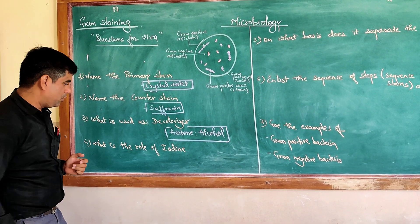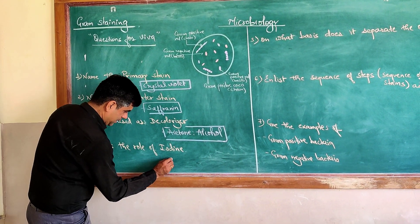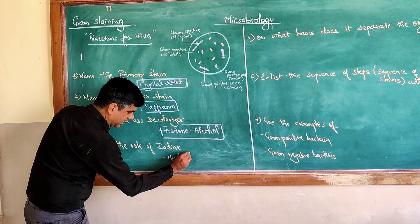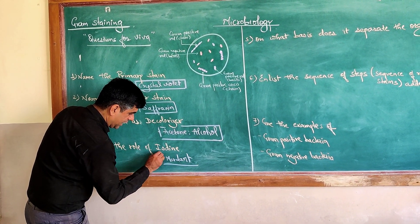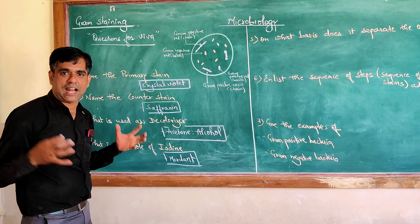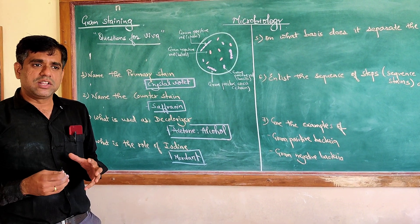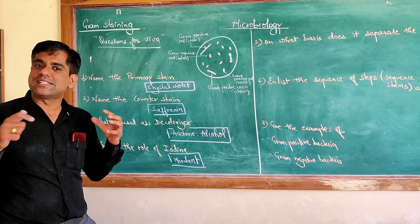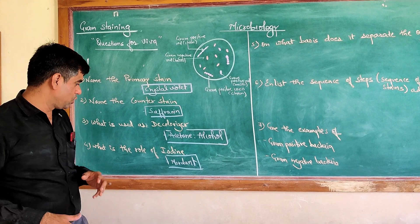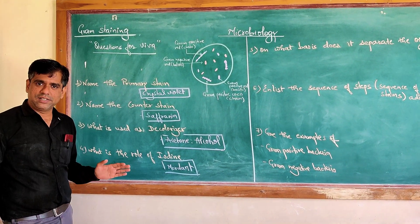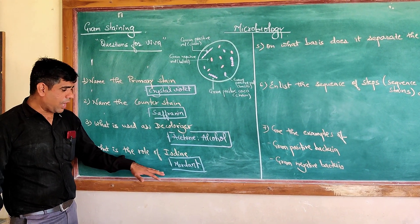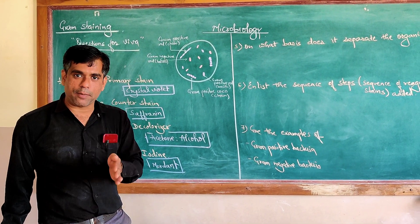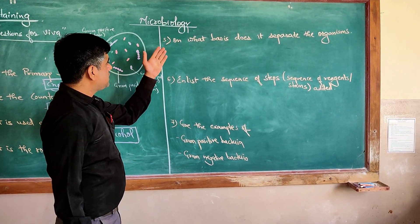The next question: what is the role of iodine? Iodine is represented as a mordant. More specifically, it acts as a trapping agent — the one which traps the crystal violet-iodine complex inside the cells.